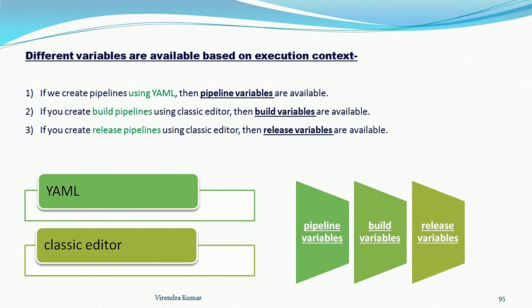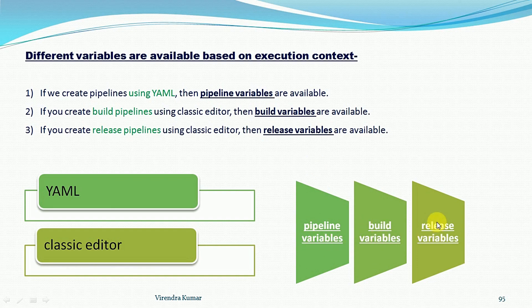In the classic editor pipelines, we can create build pipelines and release pipelines — two types of pipelines available in Azure DevOps. When we create build pipelines, we have build variables, and when we create release pipelines, we call them release variables. So pipeline variables, build variables, and release variables are not different types of variables — rather, they describe variable availability based on the execution context and what kind of pipeline you have created.